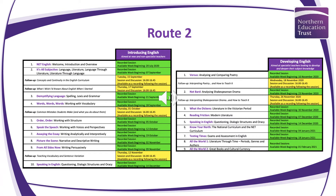Route 2 is intended to pick up from and to build on that in terms of the basics of Route 1, building further to some of the more developed and potentially complex areas of English as a subject. There are nine core sessions along with two follow-up sessions. During the course we'll be looking at teaching poetry, teaching Shakespearean drama, looking at Victorian literature, and modern literature.